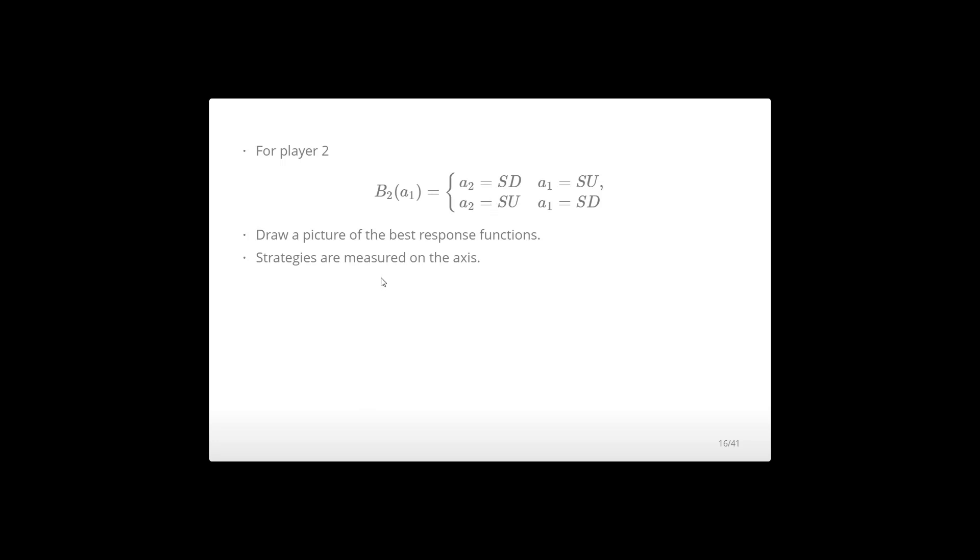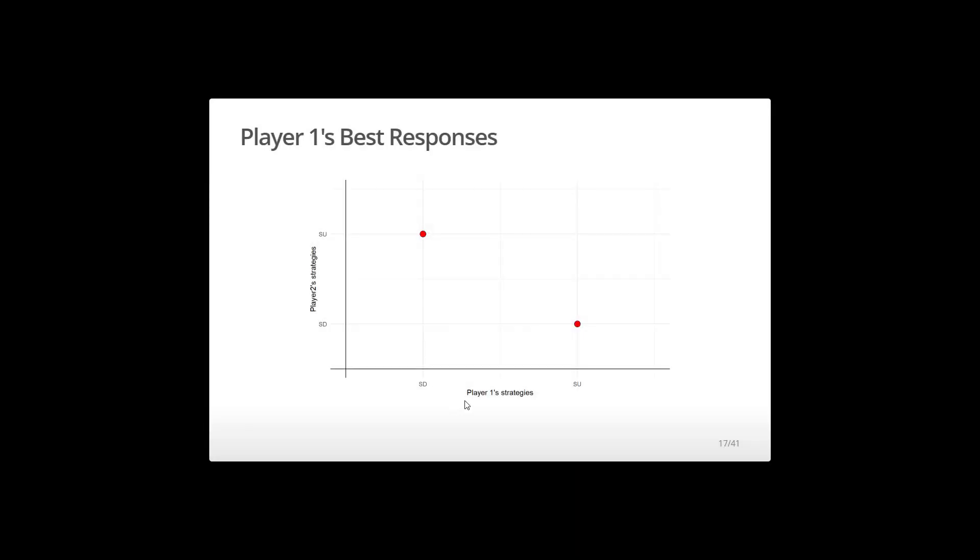All right. Well, my picture is going to have strategies on the axis. So player one strategies are going to be on the horizontal axis or player A's. And I don't know what I was thinking when I started switching from A's to 1's, but I did it. So player one is choosing slow down and speed up. Player two is choosing slow down and speed up.